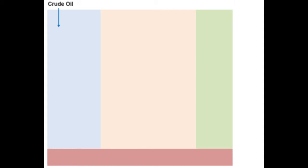The four colors you see here represent four types of processes. Blue represents separation processes, light orange or light pink represents conversion processes, green represents finishing, and the pink at the bottom represents supporting processes.